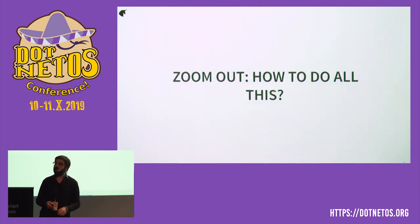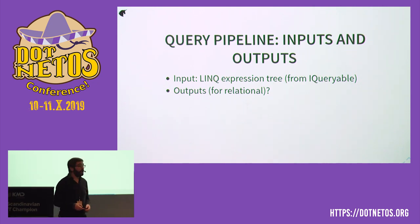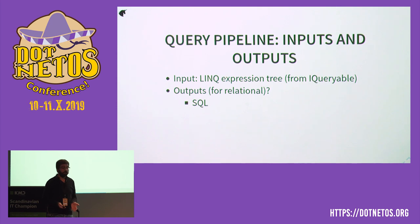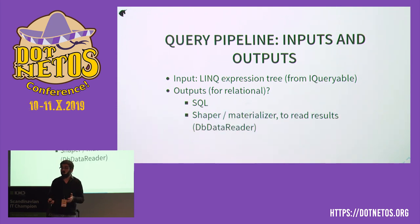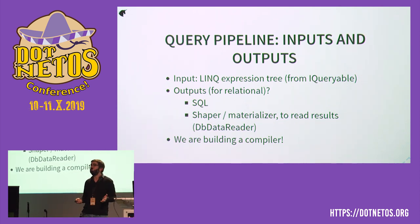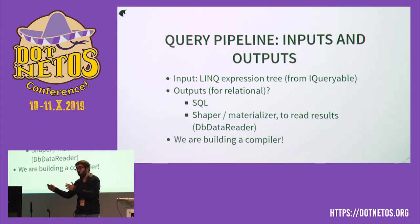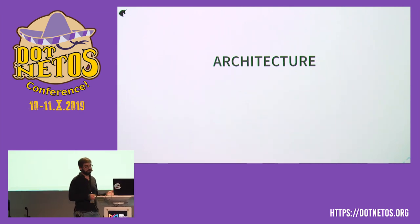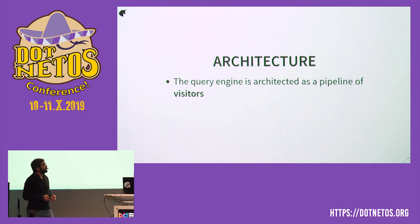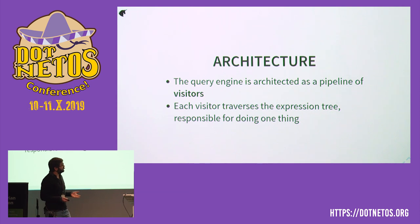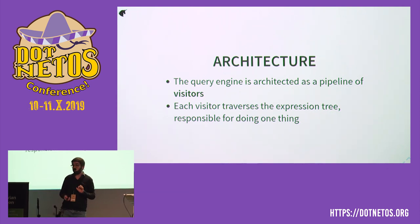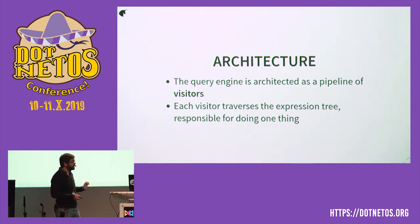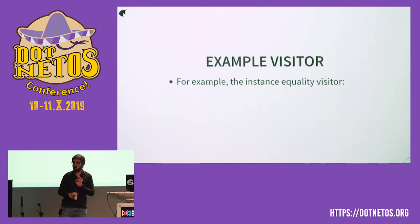And we need to do many things to expression trees before they can get converted. So let's zoom out — how are we actually going to do this? The query pipeline has inputs and outputs. The input is a LINQ expression tree from an IQueryable. For a relational database, the outputs are SQL (obviously) and a shaper or materializer — a component that reads back all the results. We are basically building a compiler: taking an expression tree from one language representing C#, and compiling it into a sort of SQL. We actually use that word internally. The query pipeline is architected as a pipeline of visitors.